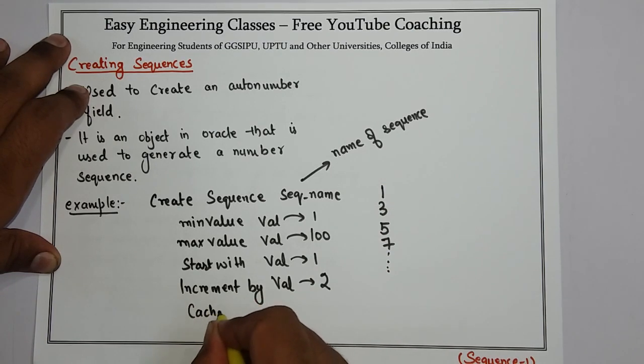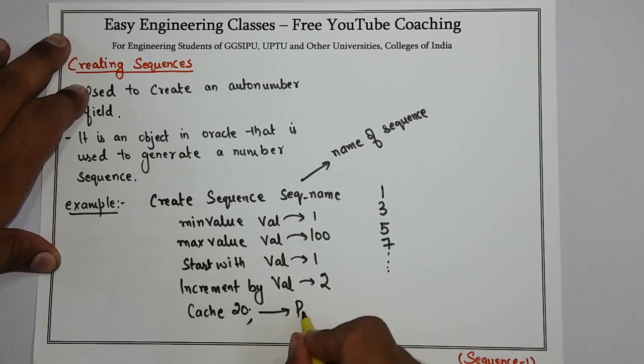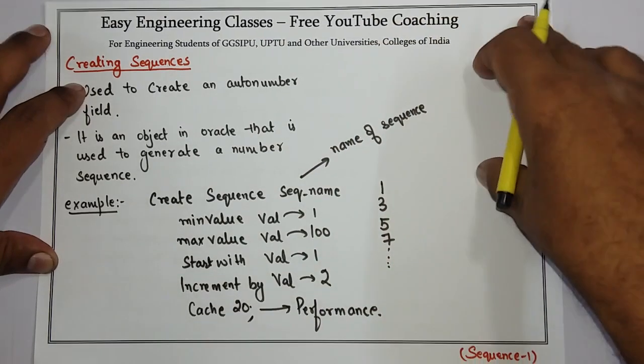And last you need to specify the cache size, which is basically used for the performance part. So this is how you can create a sequence in any Oracle database.